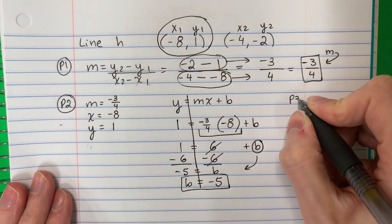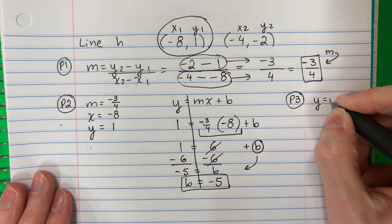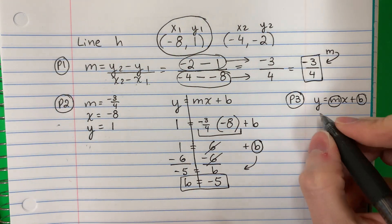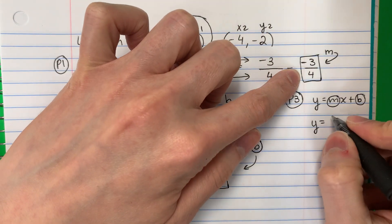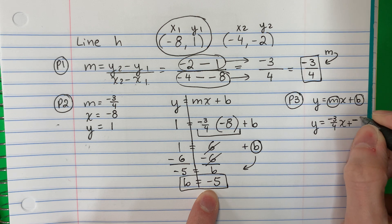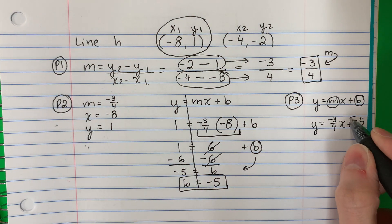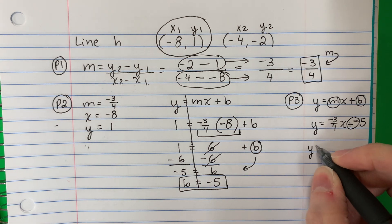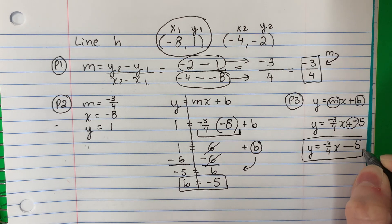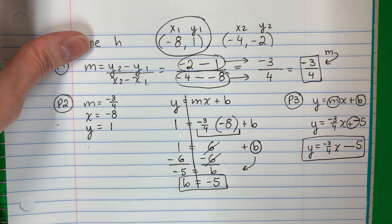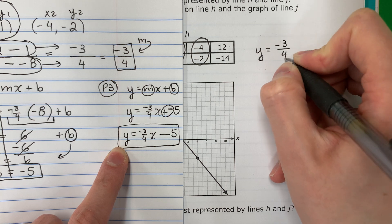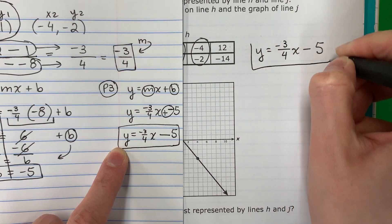Now part three: Y equals MX plus B — we change M and B. M is negative three-fourths and B is negative five. Plus minus is minus. So y equals negative three-fourths x minus five. That is the equation for line H.